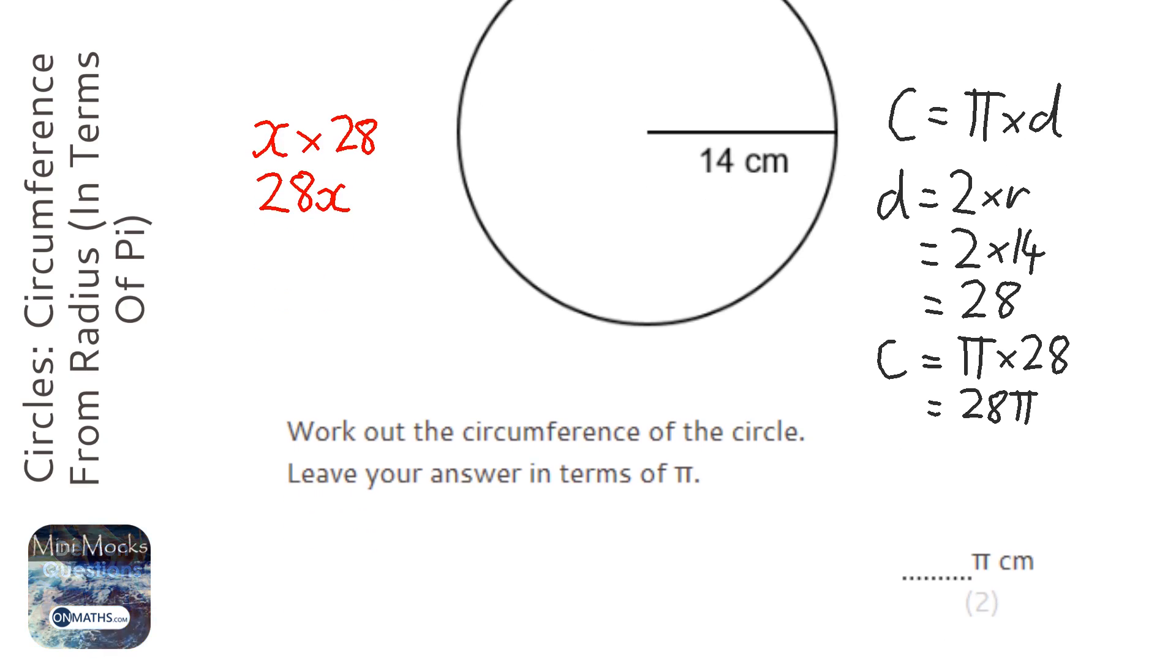Now that means if we had a calculator, I would type in 28 times pi and it will give me the answer. In fact, on all the modern calculators, if you just type in 28 pi, it will give you what the answer is. So my answer in terms of pi is just 28 pi.